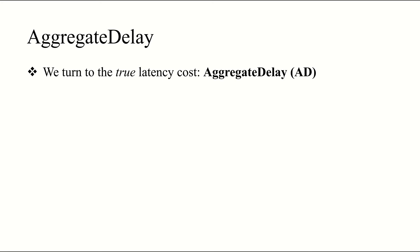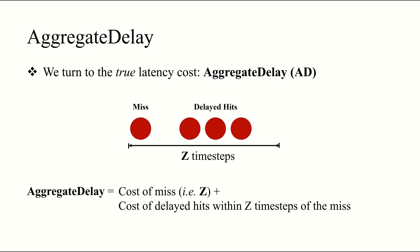Our insight, which we learned from Belatedly, is that we should use an object's aggregate delay, or its true latency cost. Since I didn't have time to go over Belatedly's formulation, I'll give you the intuition instead. When we have a cache miss, it doesn't just affect the latency for that request, but it also affects the latency of subsequent requests that fall within Z timesteps of the original miss, that is, the delayed hits. So, we must incorporate their cost as well. Aggregate delay is precisely this. It's the cost of the miss, plus the cost of delayed hits, which fall within Z timesteps of the miss. And this depends on the characteristic burstiness of objects.